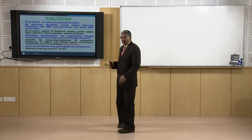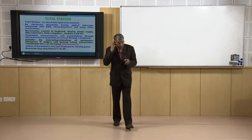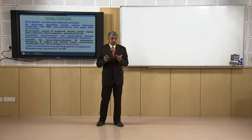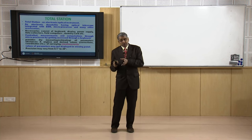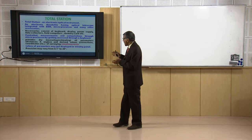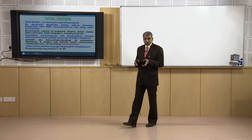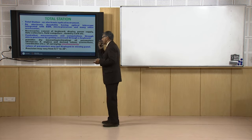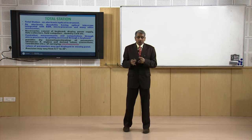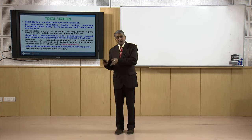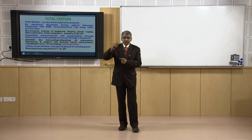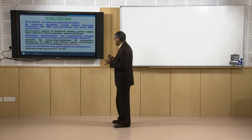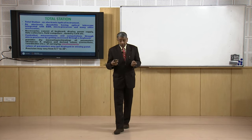Inside the total station there is a microprocessor which controls all the operations of the different parts of the instrument. It is the microprocessor which makes the measurements, and using the microprocessor we carry out computations — that means our total station carries out the computations. Finally, it provides all the final measurement parameters like horizontal distance, vertical distance, slope distance, horizontal angle, vertical angle, and the location of points — all these things we get directly from the total station.